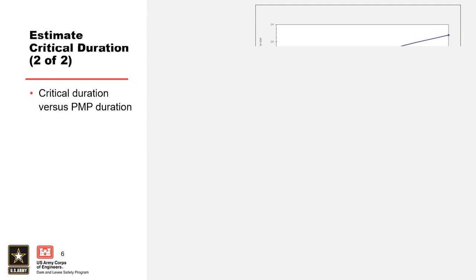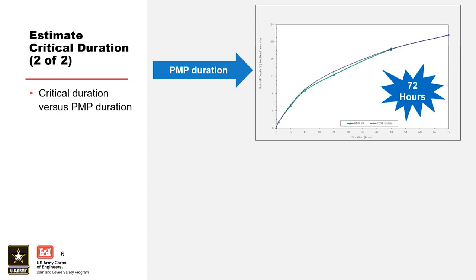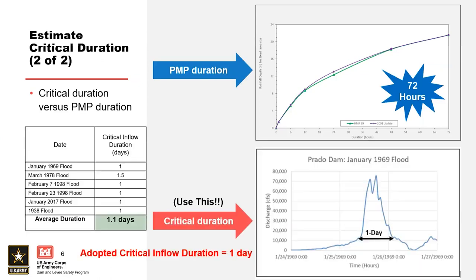A common mistake is to confuse critical inflow duration with PMP duration. While a typical PMP duration based on current hydrometeorological reports (HMRs) is 72 hours or three days, that does not mean the critical inflow duration will be the same. For example, at Prado Dam, the PMP duration is 72 hours, but the critical inflow duration is only one day. It is important to clearly document which duration is being discussed.